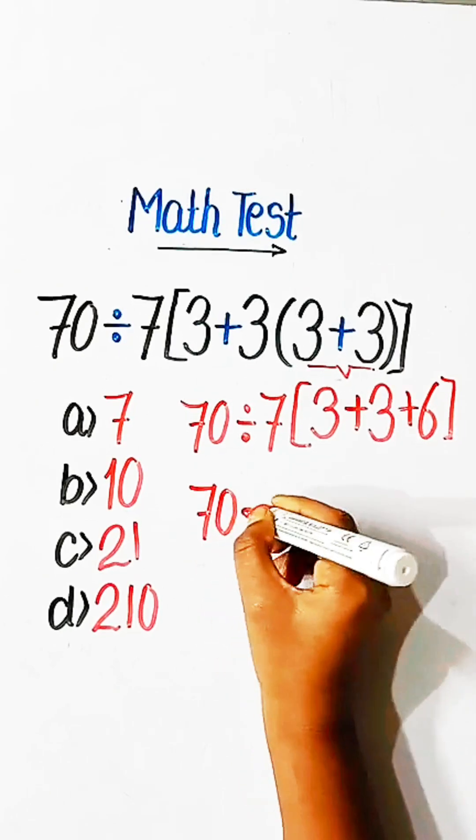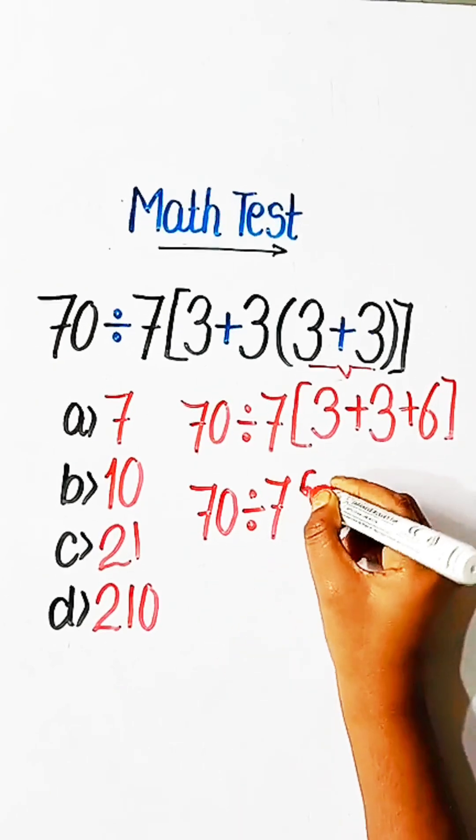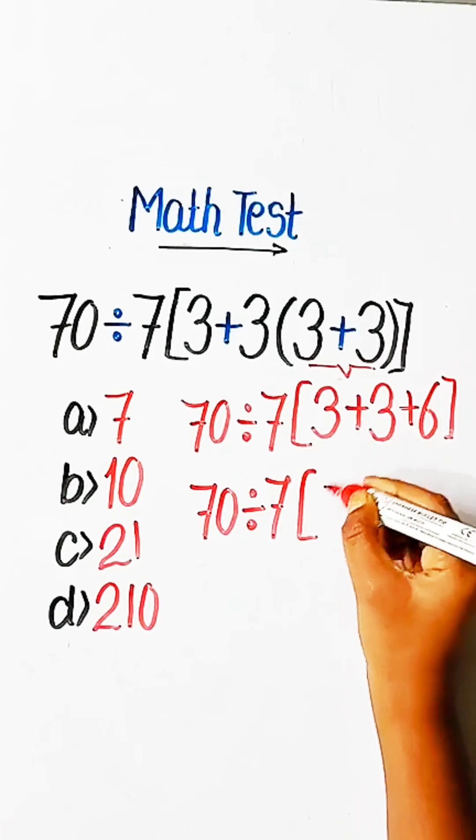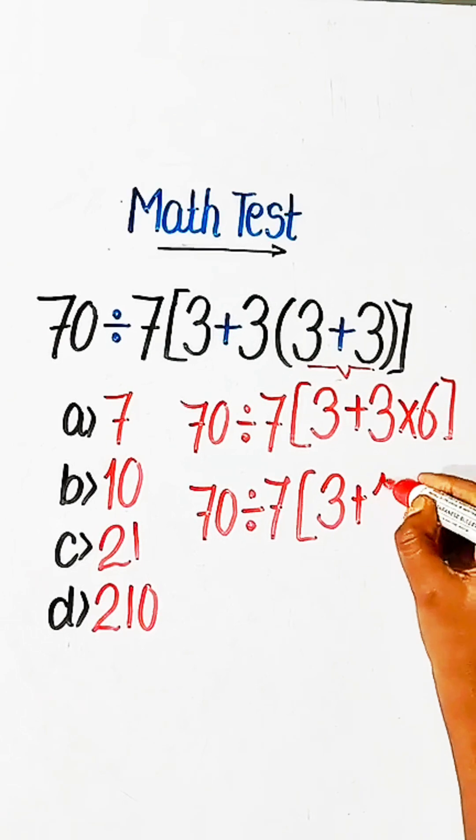70 divided by 7, bracket 3 plus 3 into 6 equals 18.